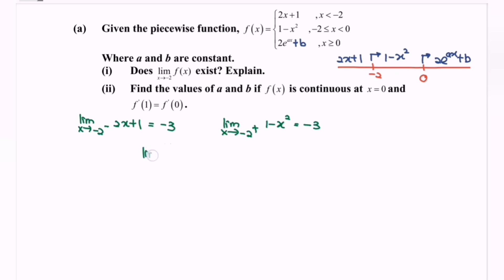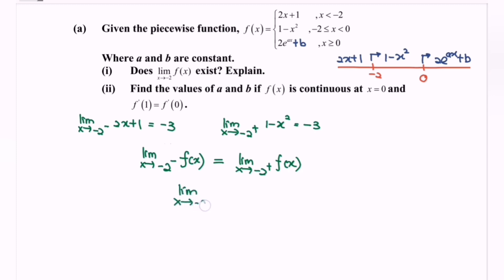The limit when X approaches negative 2 from the left for f(X) equals the limit when X approaches negative 2 from the right for f(X). Since both sides equal negative 3, the limit exists. Therefore, the limit when X approaches negative 2 for f(X) equals negative 3, and the limit exists.